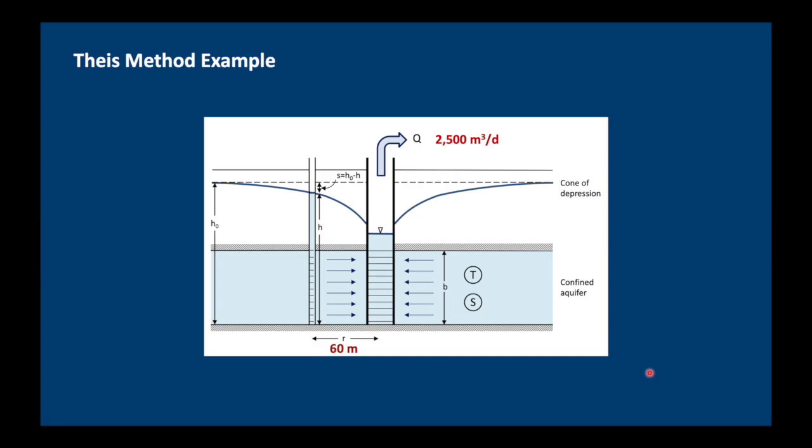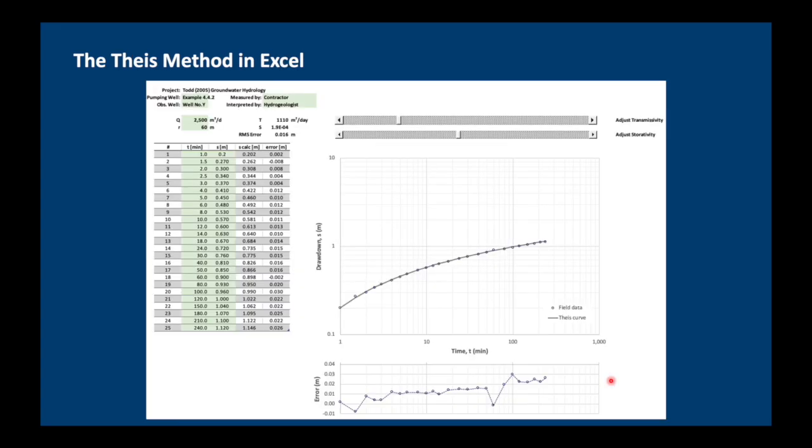So here is a review of our results. Transmissivity is about 1,100 meters squared per day and storativity 2 times 10 to the minus 4. Why did I show you all that? It's basically in case you come across an old report or maybe some old data so that you know what they were talking about when they're talking about the Theis curve fitting technique.